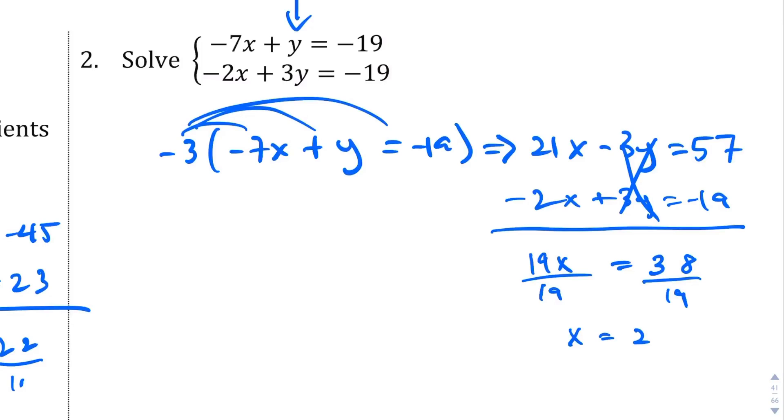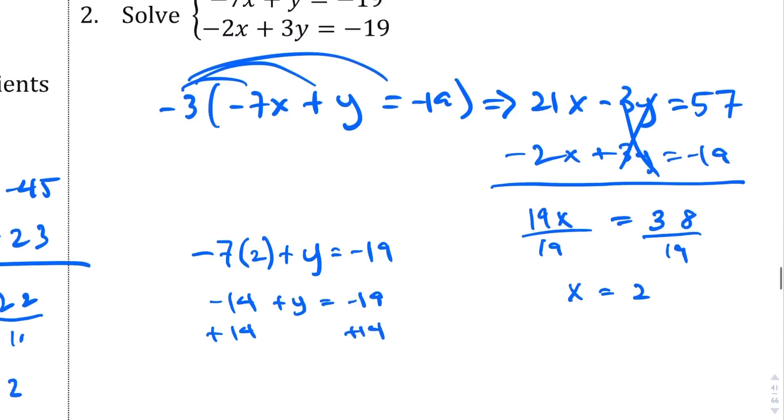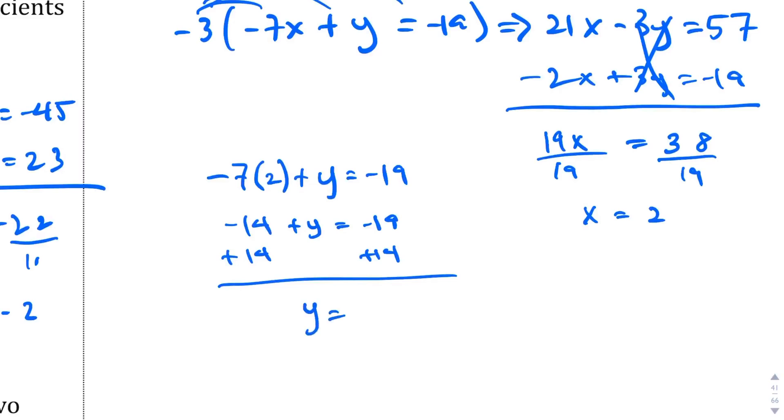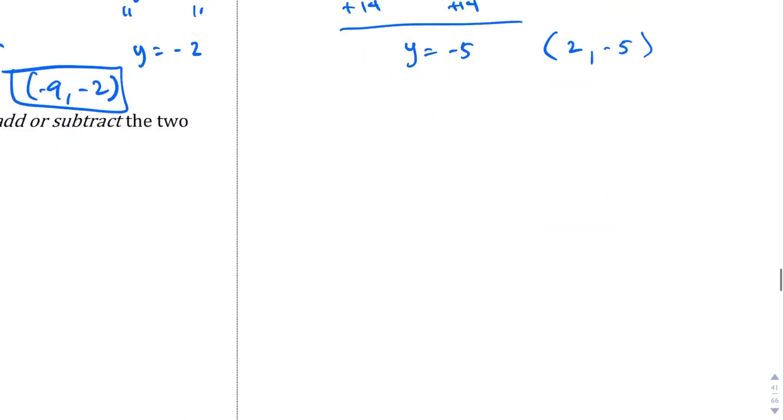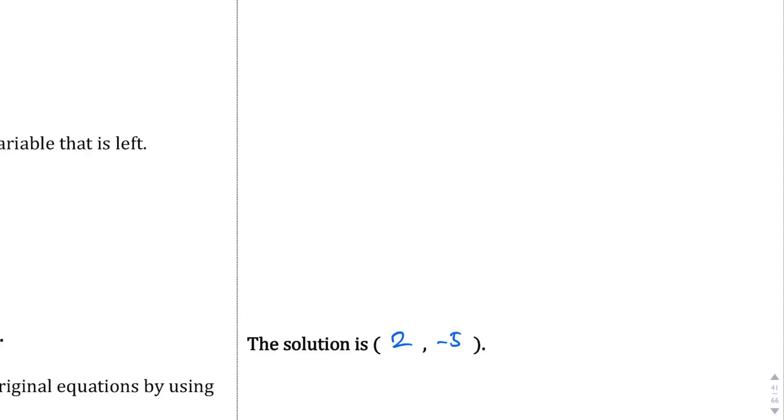And then let's plug back into the original equation here. Let's go with the top one. Negative 7 times 2 plus y equals negative 19. This is negative 14 plus y equals negative 19. We'll add 14 to both sides, and we should end up with y equals negative 5. So your answer becomes 2, negative 5. And we're going to write the solution down here, 2, negative 5.